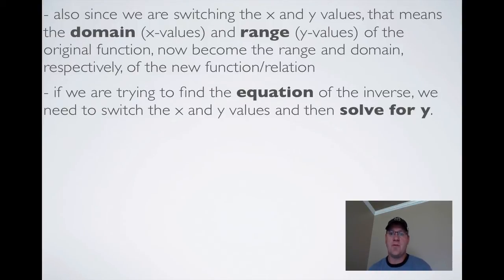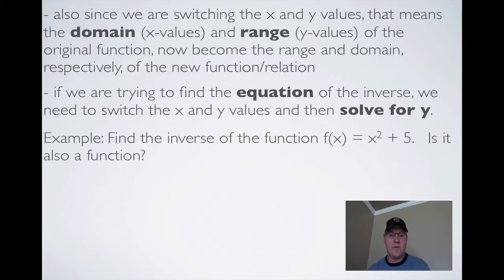If we're trying to find the equation of the inverse, we need to switch the x and y values and then solve for y. Here's our example: find the inverse of the function f(x) = x² + 5. Is it also a function? We're going to switch x and y. We know that f(x) is the same as y. If I switch these, I get x = y² + 5. Solving for y, I move the 5 over, so x - 5 = y². Taking the square root, using the square root property, gives us y = ±√(x - 5).